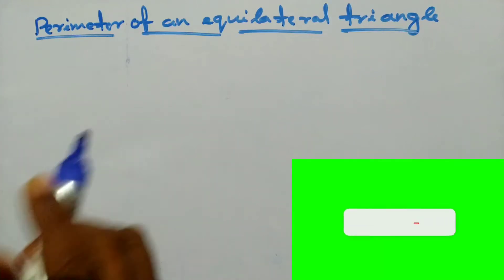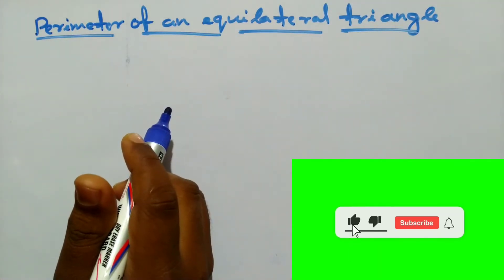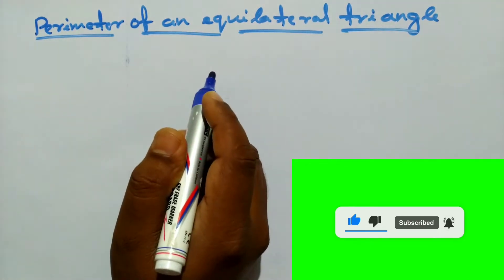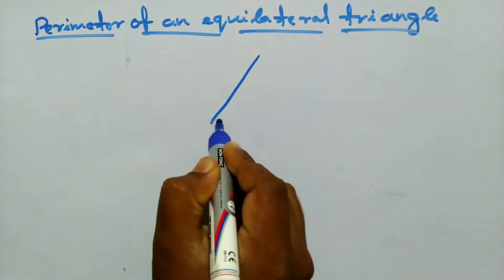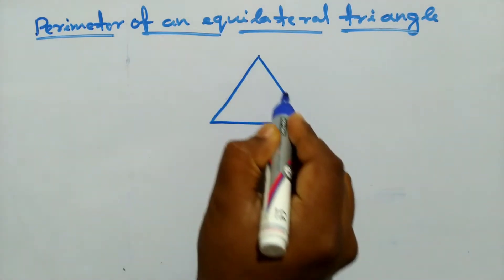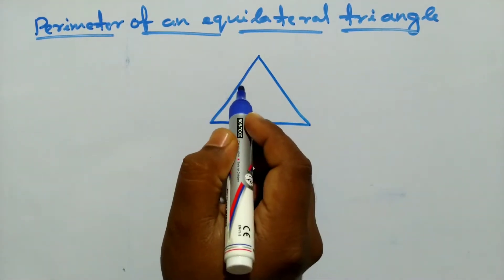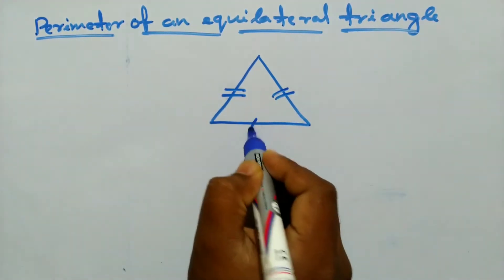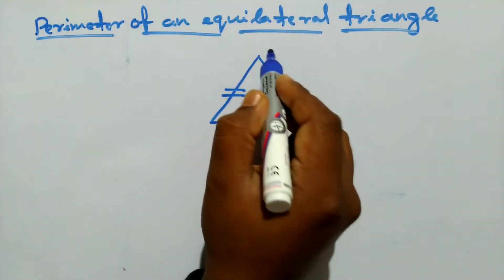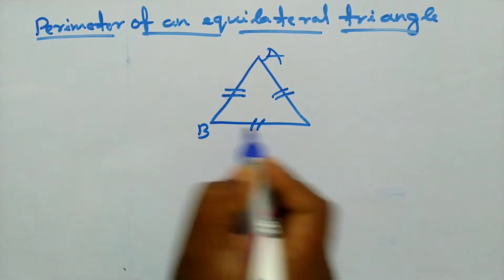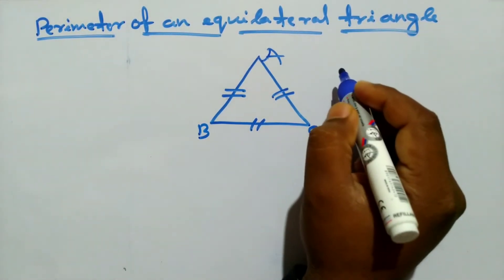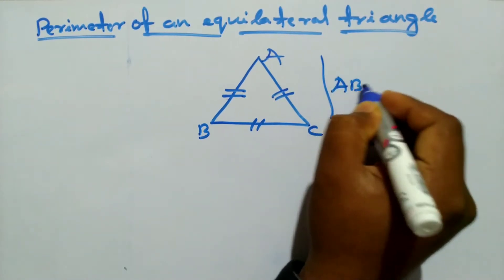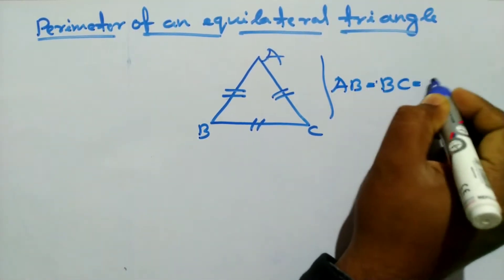Hello everyone. Today's topic is the perimeter of an equilateral triangle. An equilateral triangle means all the sides of a triangle are equal. Drawing a triangle here — all sides of the equilateral triangle are equal. Name the triangle ABC. This means AB is equal to BC is equal to AC.